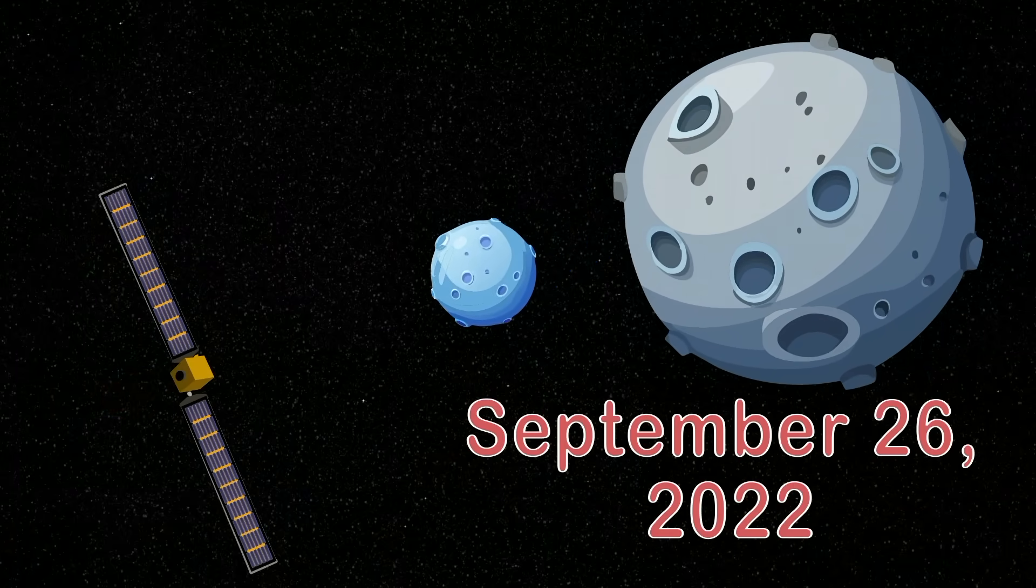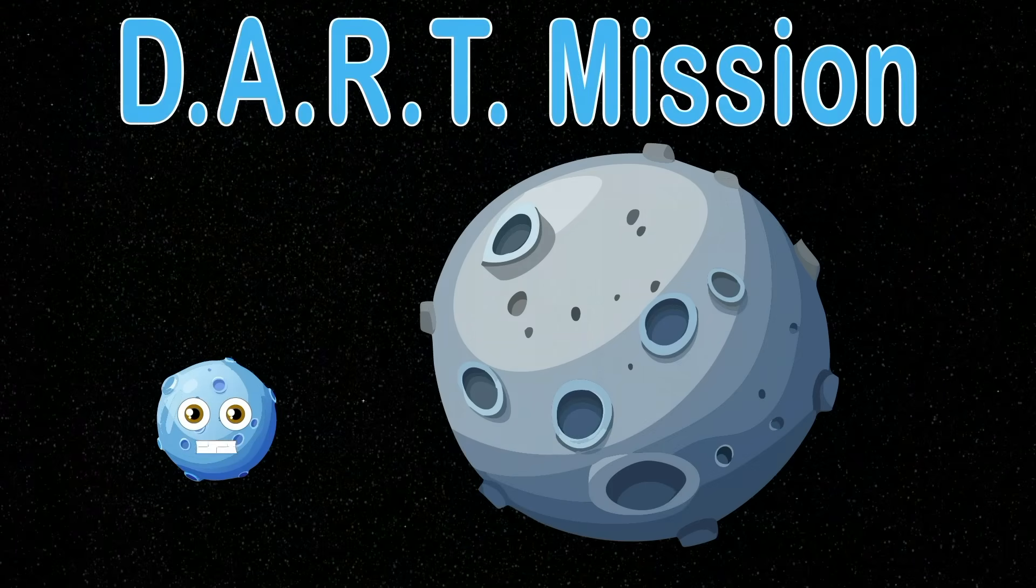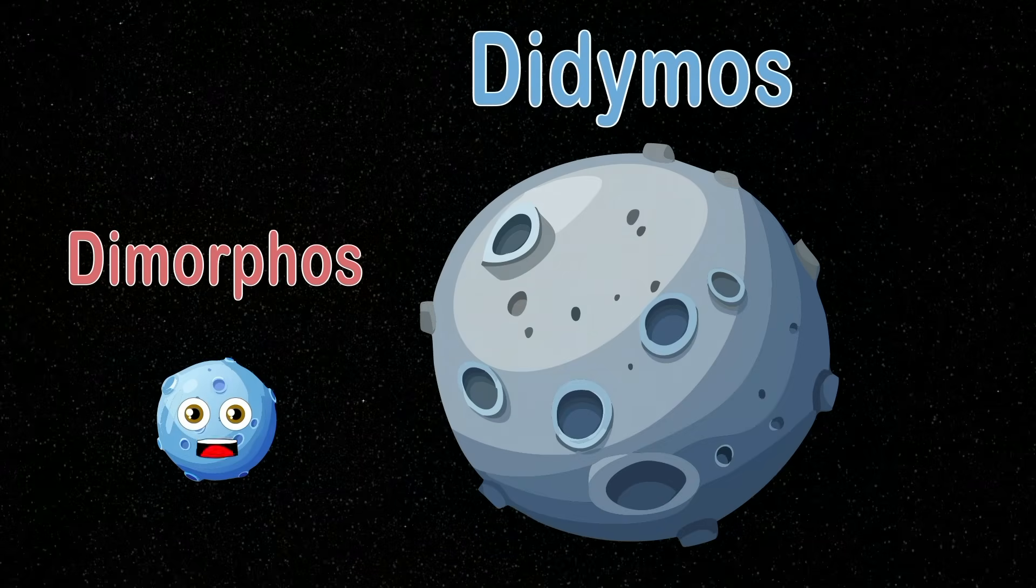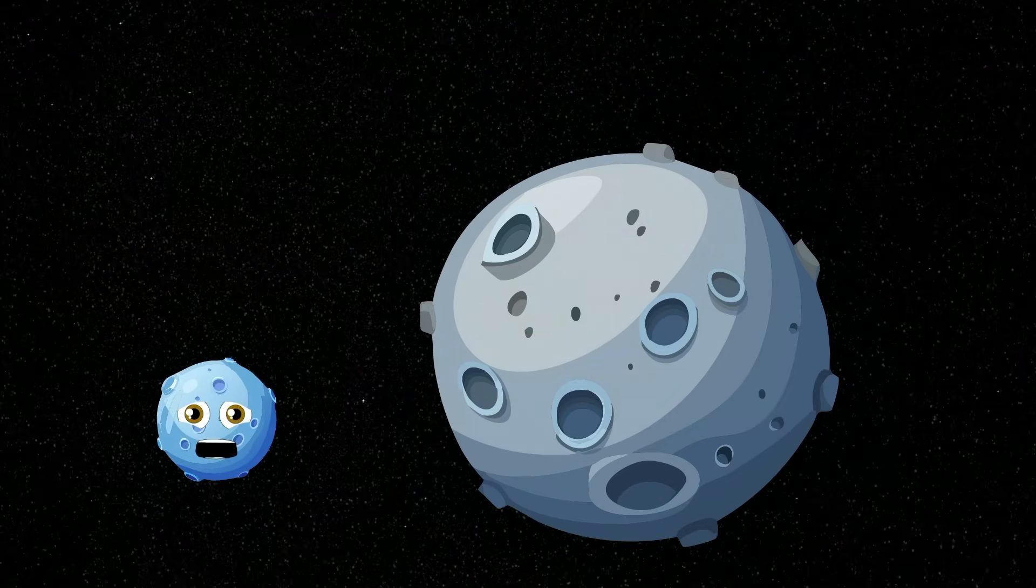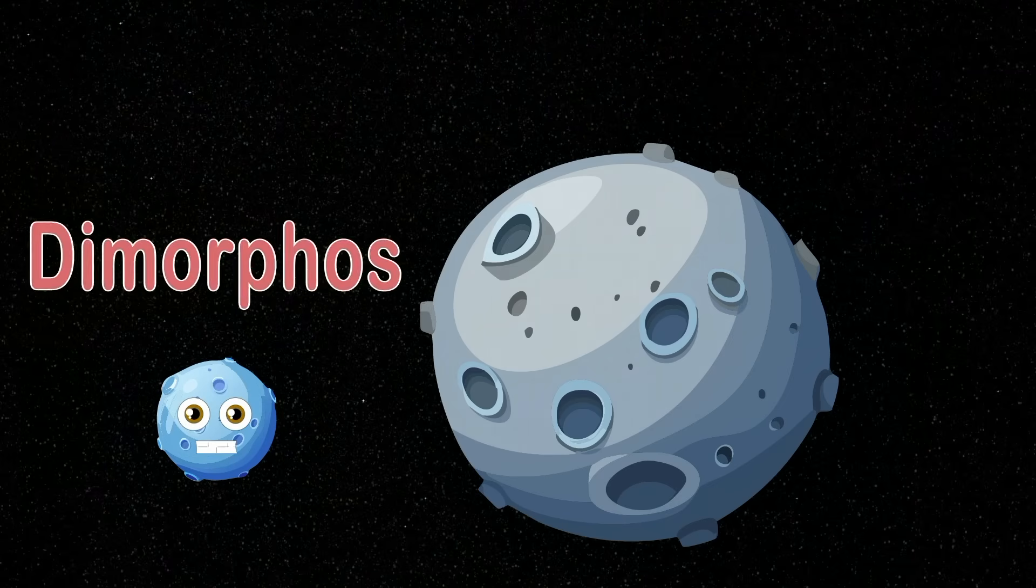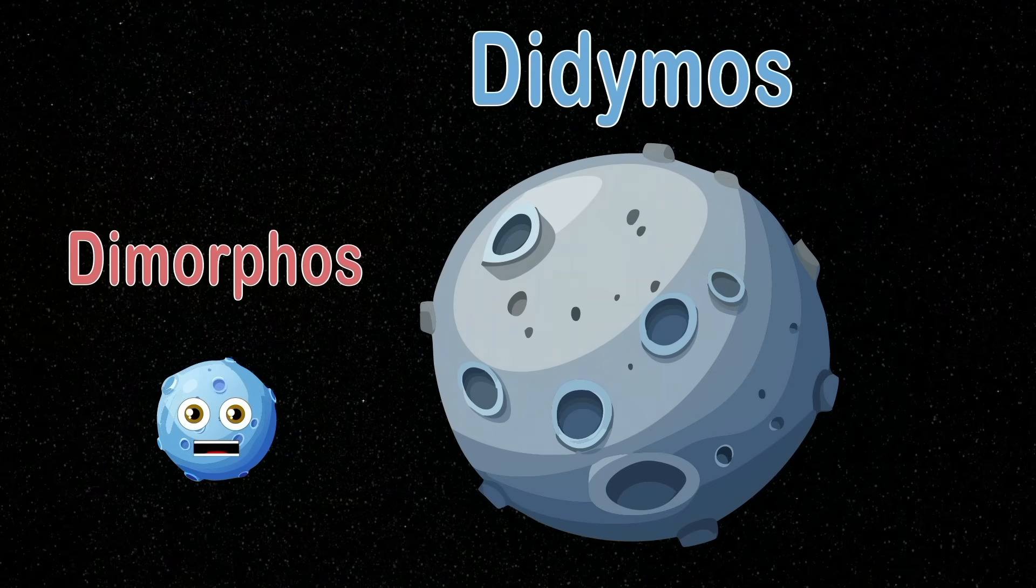What is the DART mission and how did it go? My name is Dimorphos, I orbit Didymos. What is the DART mission and how did it go? My name is Dimorphos, I orbit Didymos.